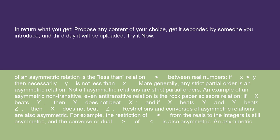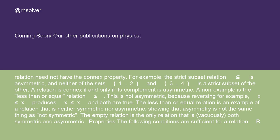Restrictions and converses of asymmetric relations are also asymmetric. For example, the restriction of < from the reals to the integers is still asymmetric, and the converse or dual of < is also asymmetric. An asymmetric relation need not have the connex property.